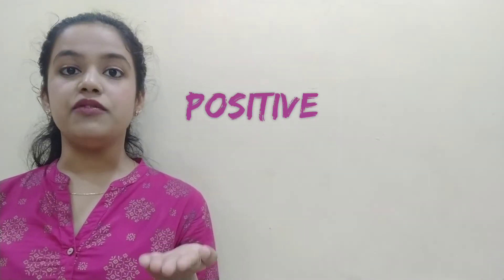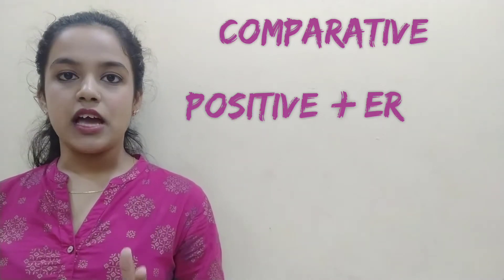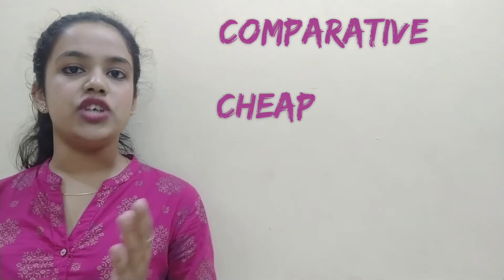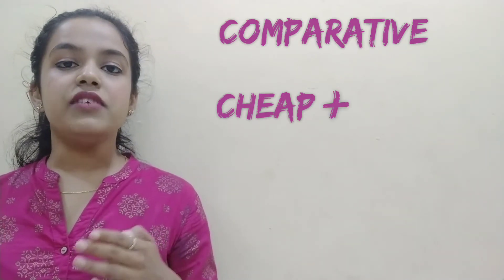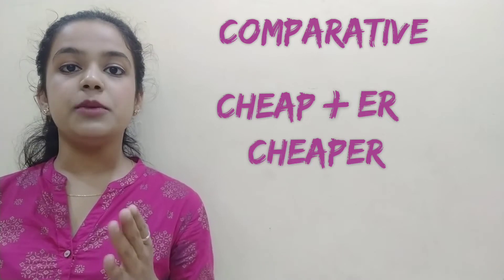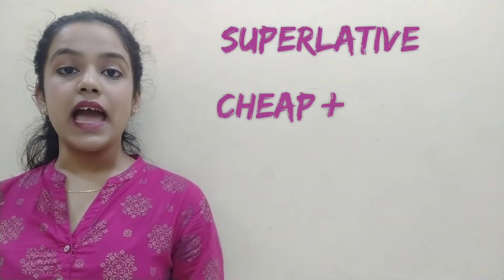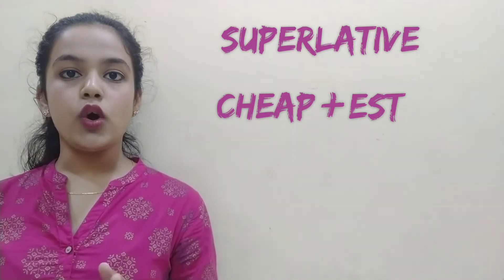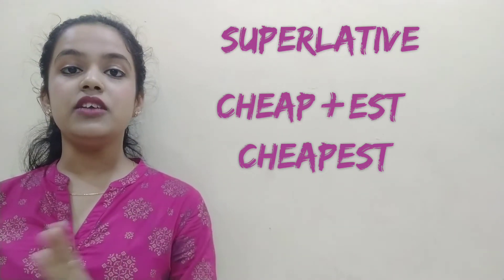Rule number one: adjectives of one or two syllables. If there is an adjective in the positive degree and we have to convert it into the comparative degree, we add ER to its end. For example, the word 'cheap' — cheap plus ER becomes 'cheaper'. And if we want to convert it into superlative degree, we add EST to the ending, so 'cheap' becomes 'cheapest' — C-H-E-A-P-E-S-T.